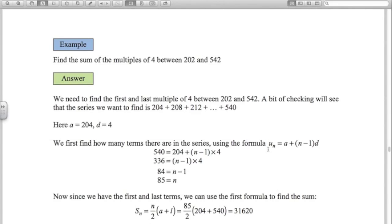This next example asks us to find the sum of the multiples of 4 between 202 and 542. So let's first identify what the first multiple of 4 after 202 is, and the one just before 542. Remembering that you can tell a number is divisible by 4 if the last two digits are divisible by 4, 204 would be divisible by 4, and 540 would be divisible by 4.